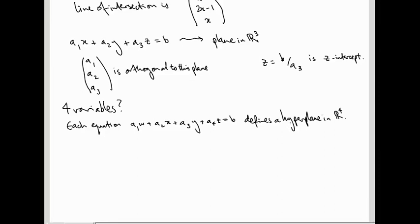So, the word hyperplane means it's cut out by exactly one of these equations. So, this is in n variables. So, a1x1 plus anxn equals b defines a hyperplane in Rn.